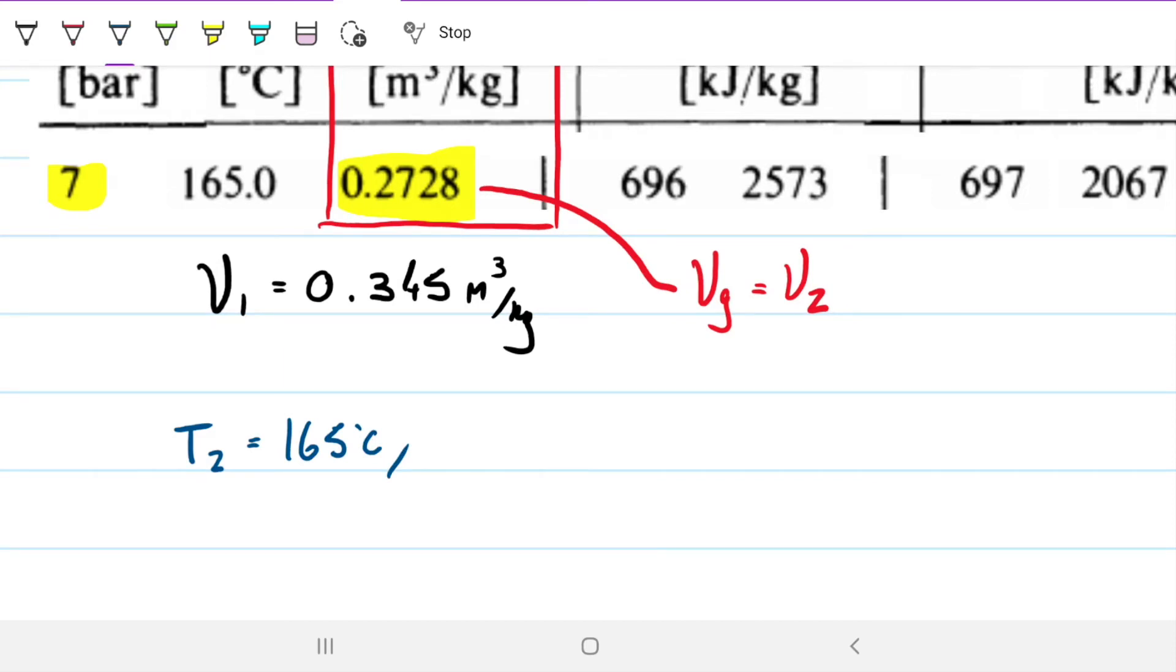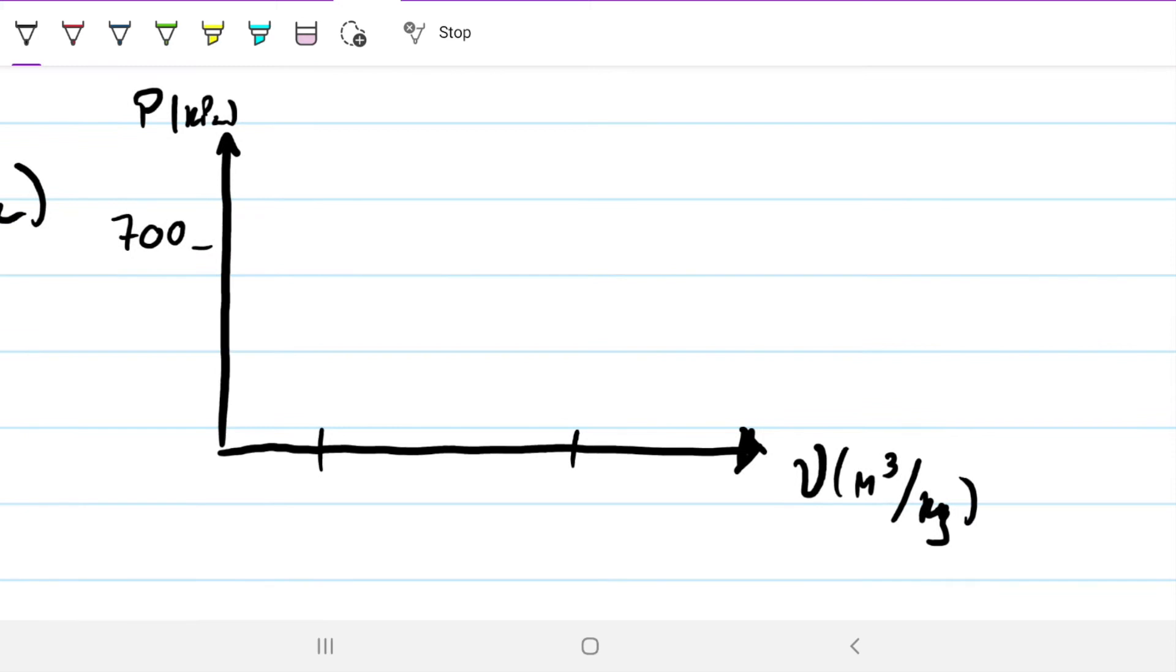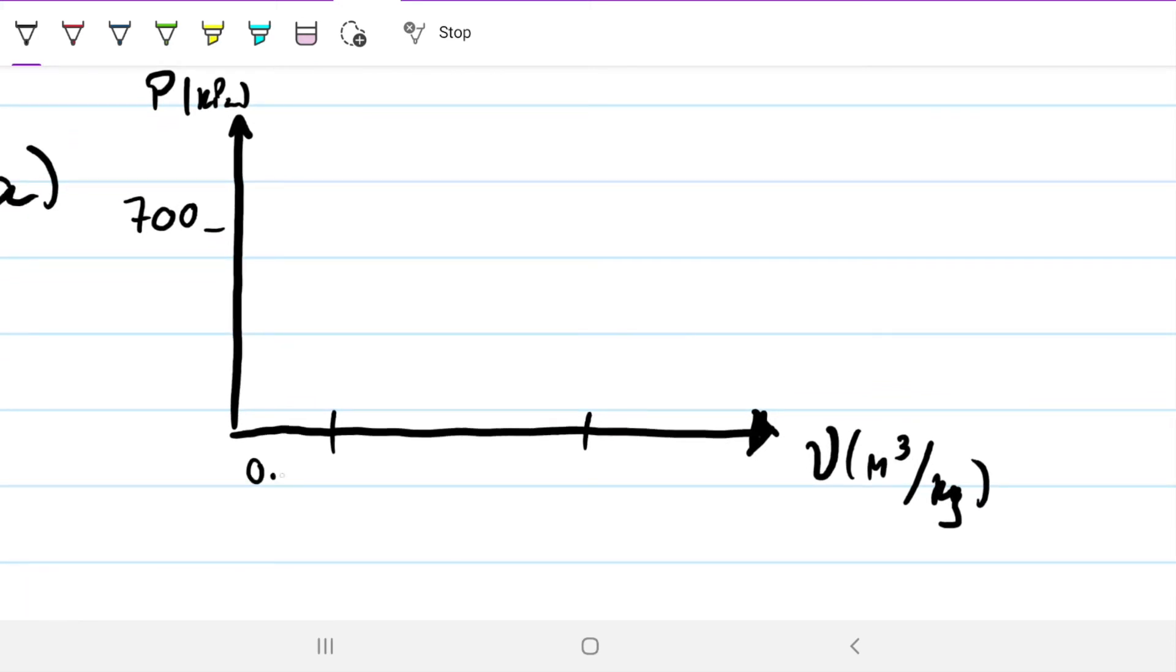First thing we're asked to do is draw the PV diagram. I have a sketch here already. I can write down 700 kilopascals on the y-axis, and on the x-axis, I have the two specific volumes: the smaller one, 0.2728, which is the saturated vapor one, and the other one, 0.345. It's an isobaric process, so the pressures are the same on both states. We're going to go from this to this on a straight line because our pressure is not changing. This is state one, this is state two. That is our PV diagram.